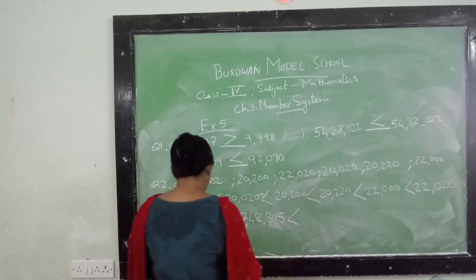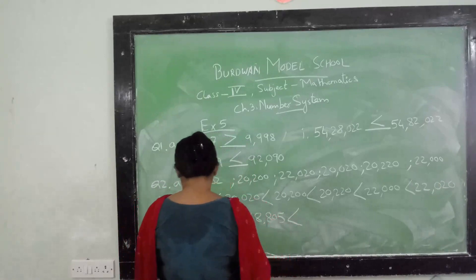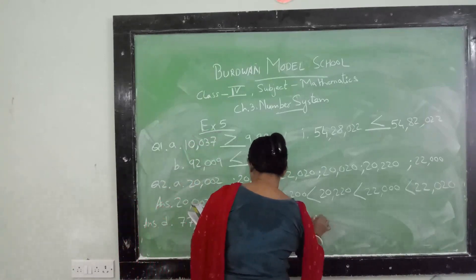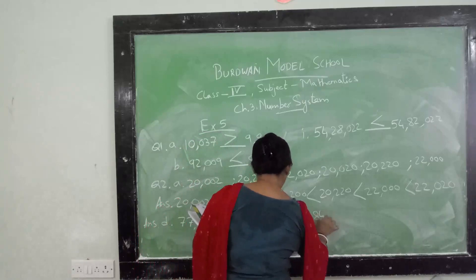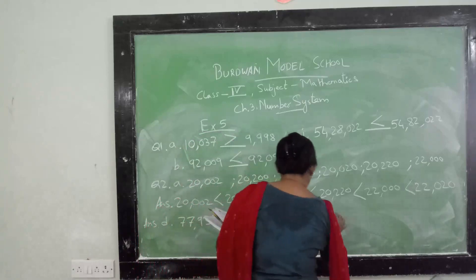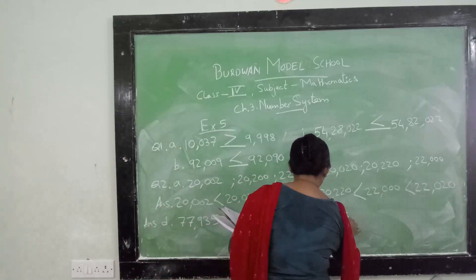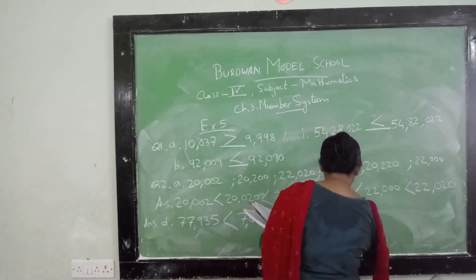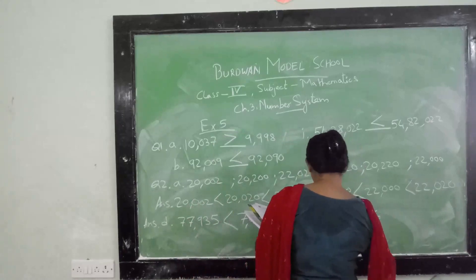Again less than 8 lakh 64 thousand 171, again less than 9 lakh 5 thousand 667.